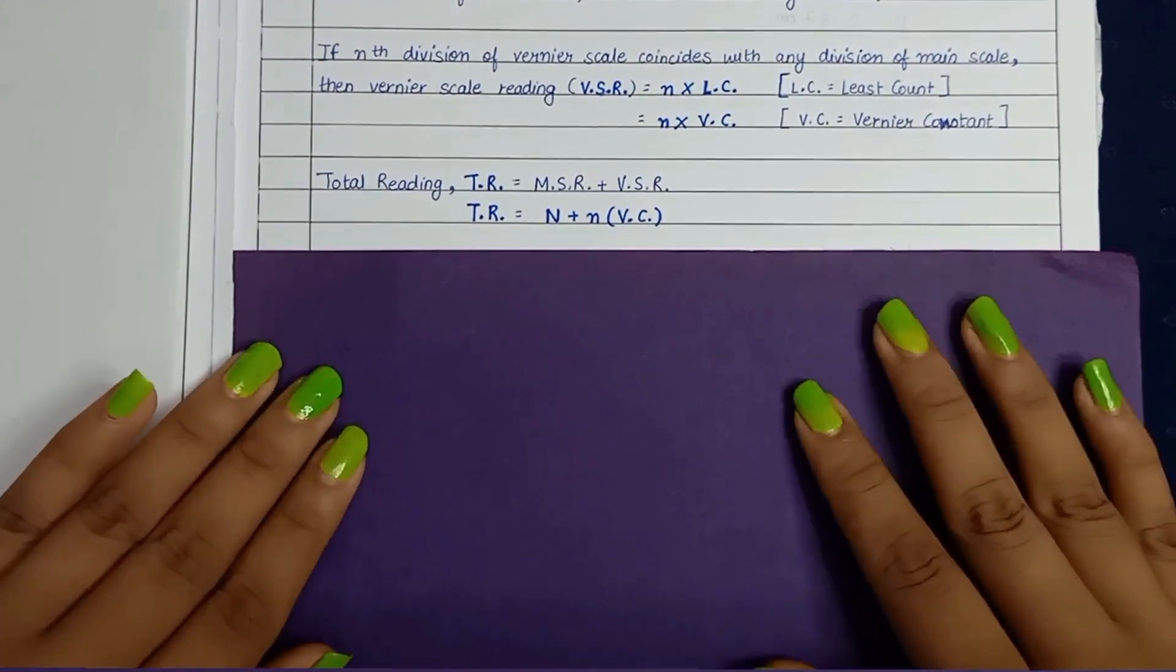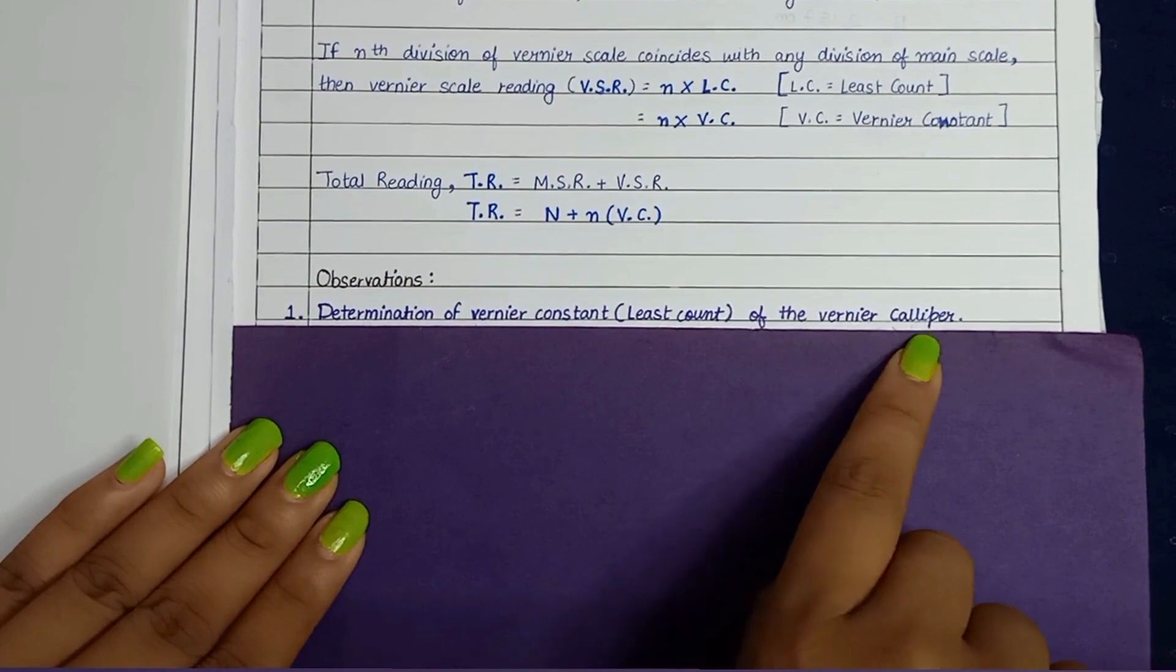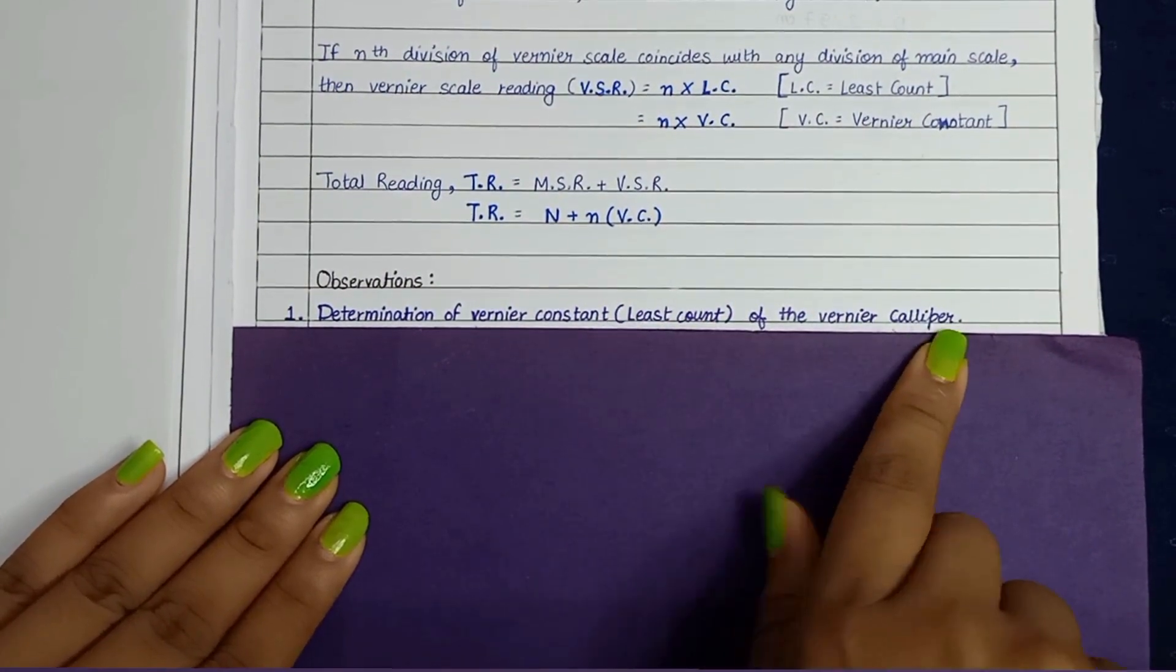Now coming to the observation part. First, we have to determine the vernier constant of vernier calipers or you can say least count of the vernier calipers.